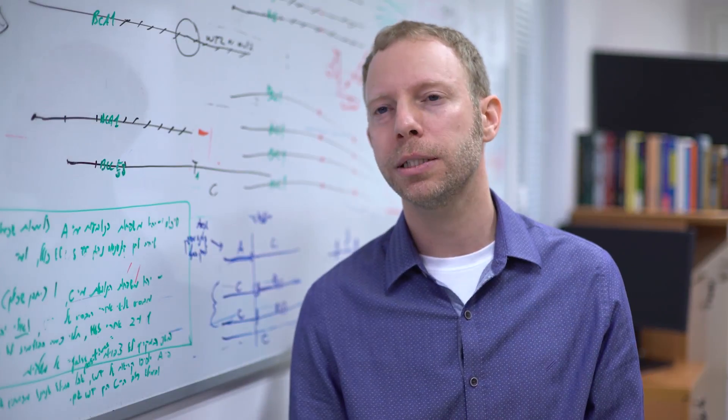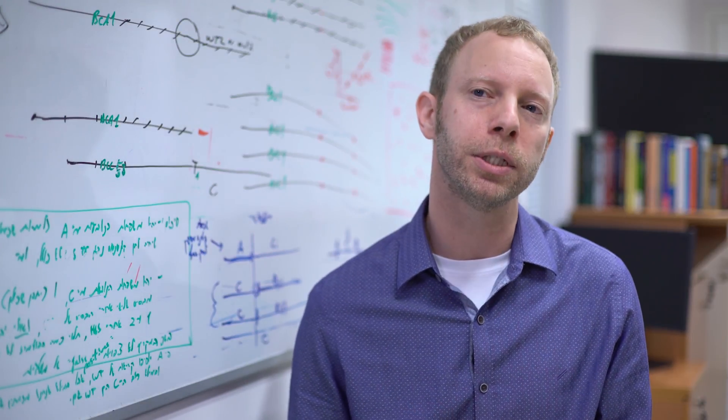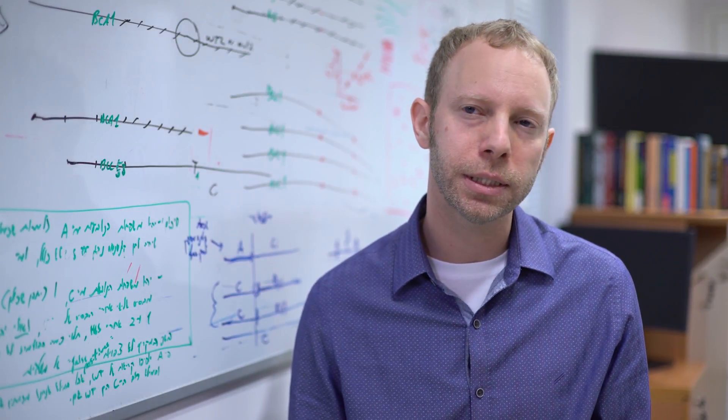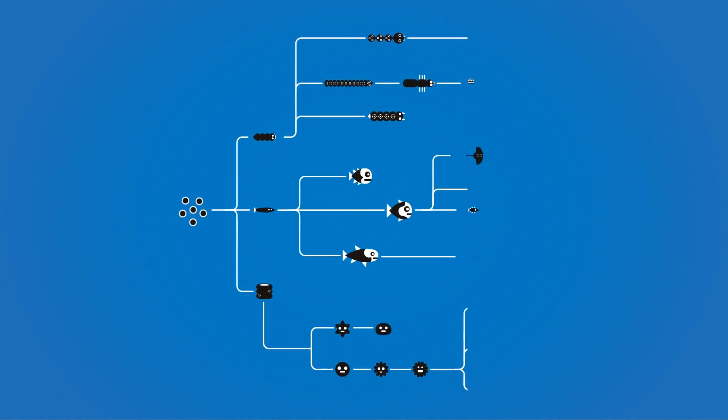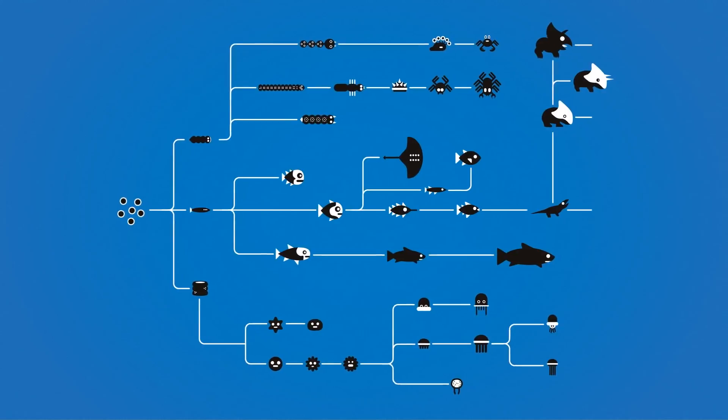To understand Darwin, we must understand that he made two separate points, not one. First, he said that evolution happened. Second, he proposed an incomplete answer for how it happened.